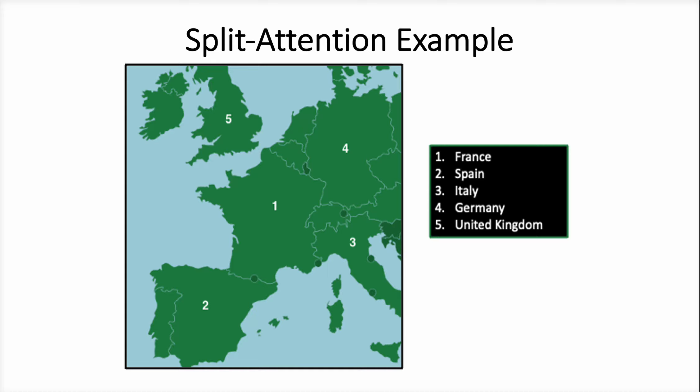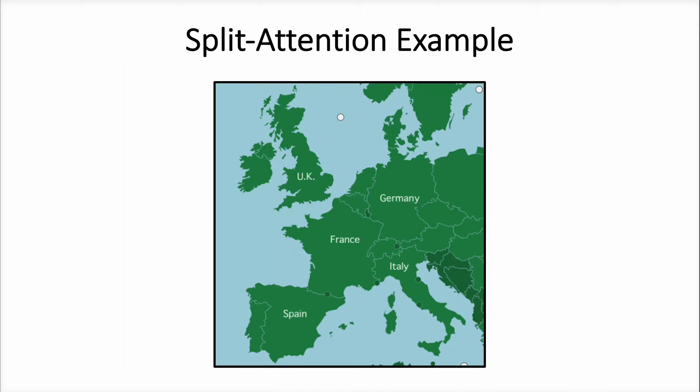Number one is France, number two is Spain, number three is Italy, number four is Germany, and number five is the United Kingdom. Each country has been clearly identified, but learners have to look between the map and the key to know which country is which. Now look at the following map. The same countries are identified, but this time each is labeled with the country's name identifying its location. Integrating the country's names directly into the map lessens the split attention and minimizes cognitive load.